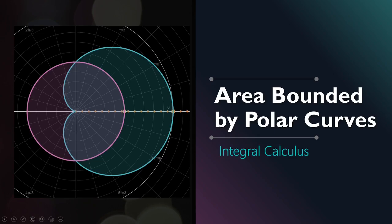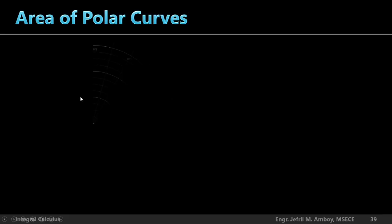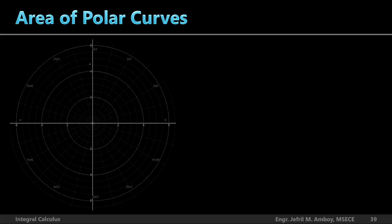This is how a polar coordinate system looks like. We place the x and y-axes here for reference. However, in polar coordinates, a point P is defined by the ordered pair (R, θ), where R is the radial distance of the point from the pole. The pole is like the origin of the Cartesian coordinate system. This theta is the angle which the radius makes with the positive x-axis.